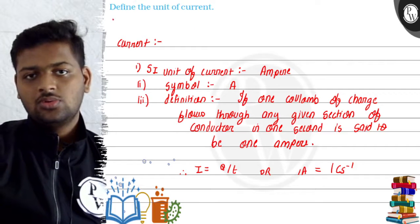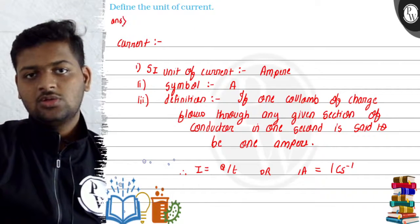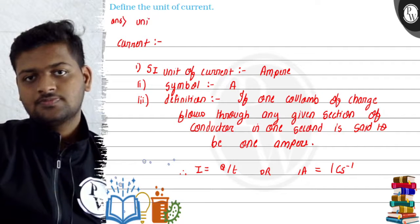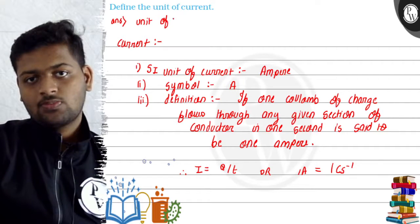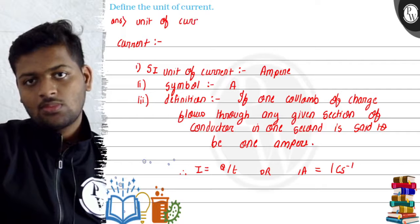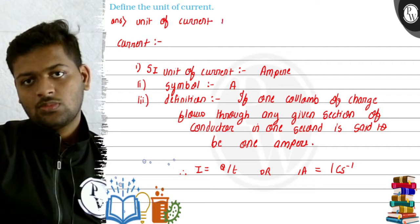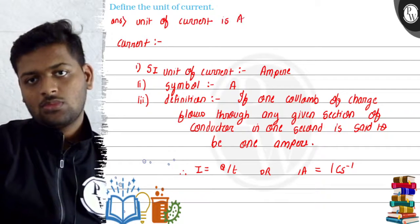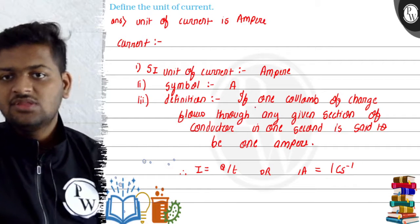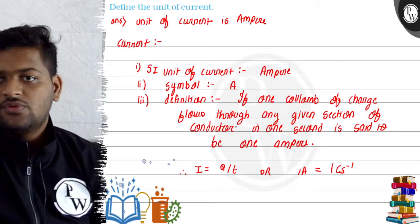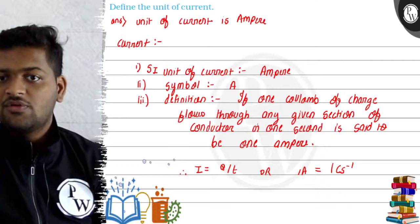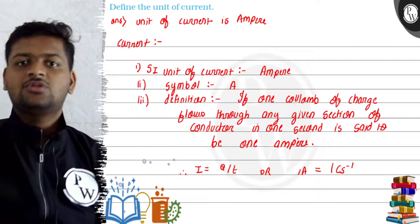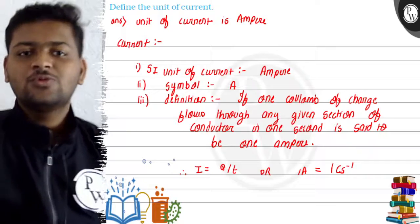So the answer is: unit of current is ampere, and the definition is if one coulomb of charge flows through any given section of conductor in one second, it is said to be one ampere. Thank you.